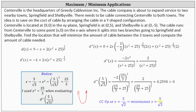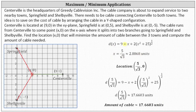Now that we've verified D of X is minimized at X = 5/√3, the location that minimizes cable is the point (5/√3, 0) on the X-axis. To find the amount of cable needed, we evaluate D(5/√3). The amount of cable needed is approximately 17.6603 units.